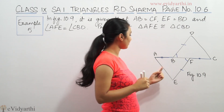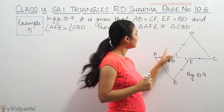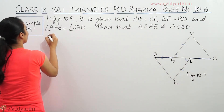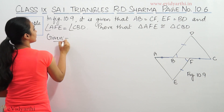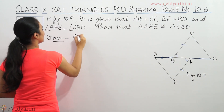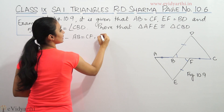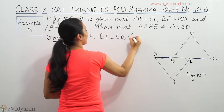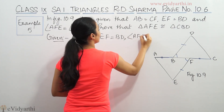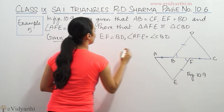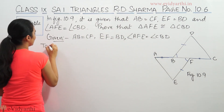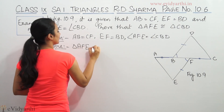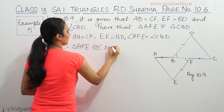We have to prove that triangle AFE is congruent to triangle CBD. Given that AB is equal to CF, EF is equal to BD, and angle AFE is equal to angle CBD. We need to prove that triangle AFE is congruent to triangle CBD.